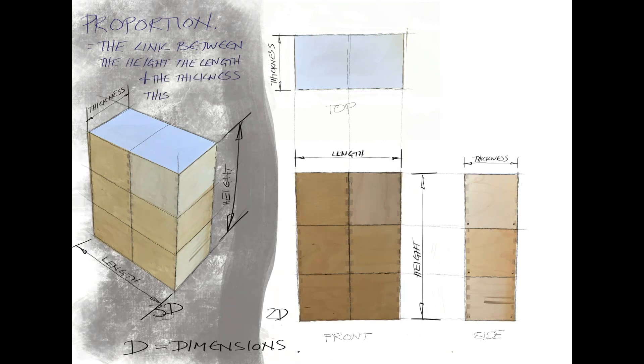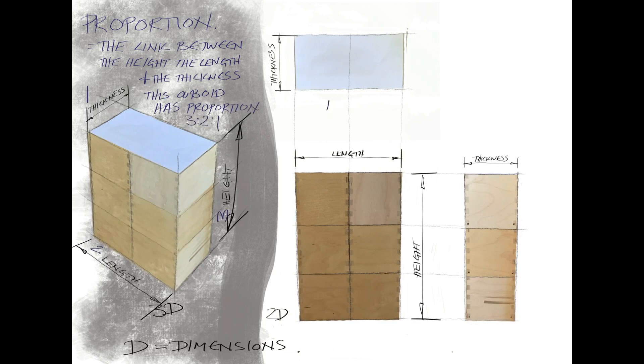The proportion of this big box—if you think about it as a cuboid—is a proportion of three, two, one: three high, two wide, one thick.